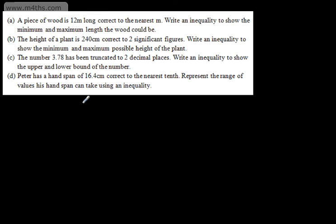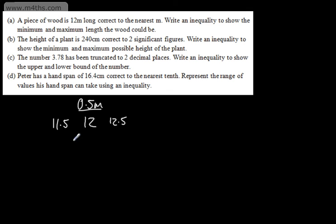We know that we've got 0.5 metres to go either way. So for the lower bound, we take that off to give 11.5, and then for the upper bound, we add it to get 12.5. So 11.5 is the minimum value, the lower bound, and 12.5 is the maximum value, which is the upper bound.